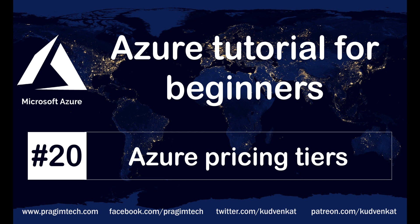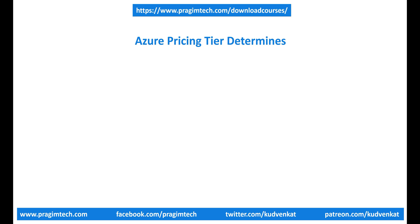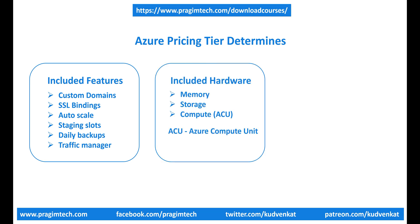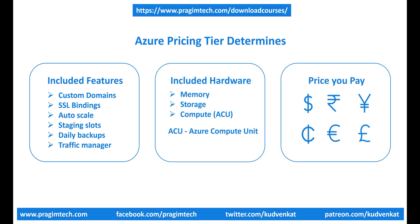When we create an App Service Plan, one of the important decisions we have to make is selecting the appropriate pricing tier, because it is the pricing tier that determines what features are available for the applications we deploy in Azure, the hardware that is available, and the price we pay. In general, the higher the pricing tier, the more features and capabilities we get.